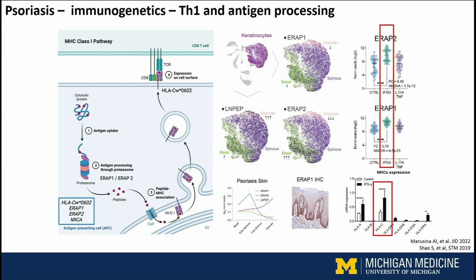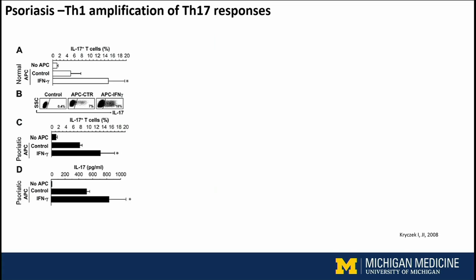Interferon gamma also has a role in amplifying IL-17 responses. This is a paper we published about 15 years ago in JCI. We took normal skin and looked at IL-17-positive T cells. If you don't culture them with dendritic cells — no APCs present — you get very few IL-17-positive cells. If you add dendritic cells in, you get more; but if you prime them with interferon gamma, you get a lot more. With psoriatic keratinocytes and psoriatic T cells, you get even more IL-17A-producing cells. Interferon gamma amplifies that, as seen both in the percentage of cells and in terms of secreted IL-17A.